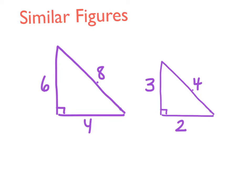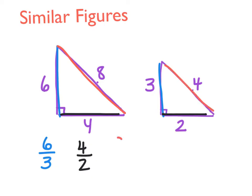So one way to test if figures are similar is to take the ratio of their sides and see if they're equal. So I could take this side. It corresponds to this side. So I'm going to write a ratio of corresponding sides. So 6 to 3. Then I'm going to take this side, 4. It corresponds to 2. So I'll write that as a ratio, 4 to 2. And then my last side, 8, corresponds to 4. 8 over 4.